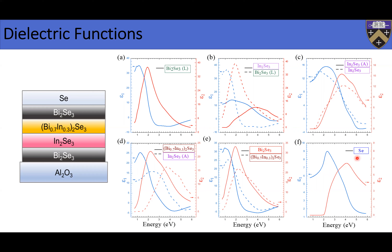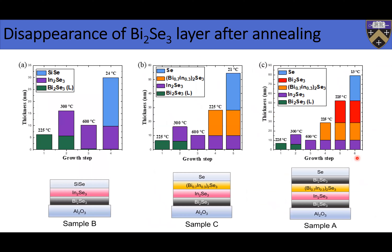By doing this systematically, you can go layer by layer and obtain the dielectric functions. These are pretty precise because, as I said, if I got this ex-situ it would be very difficult to do this. So there's a clear advantage of in-situ ellipsometry for heterostructures.